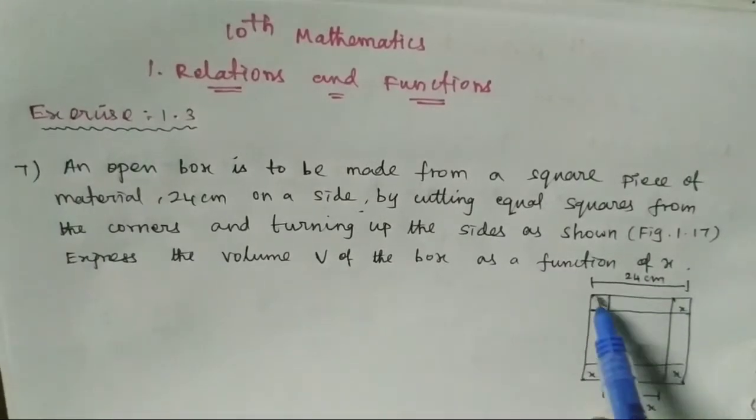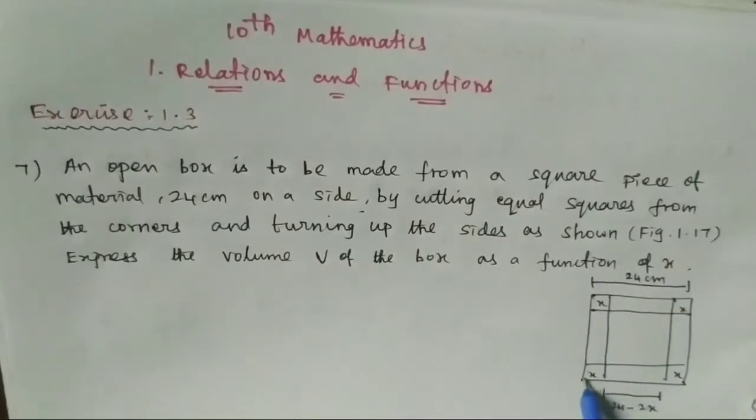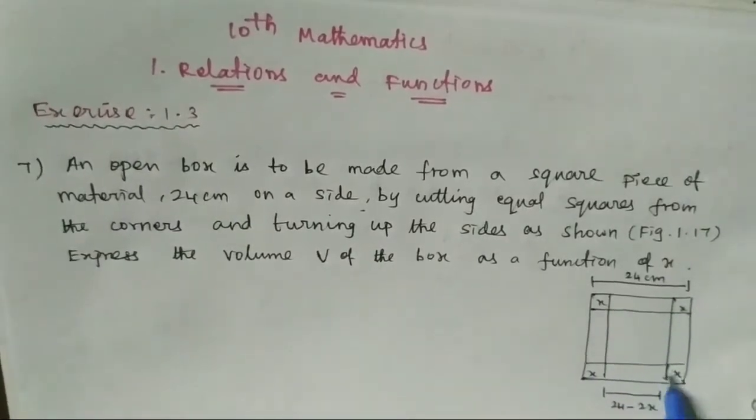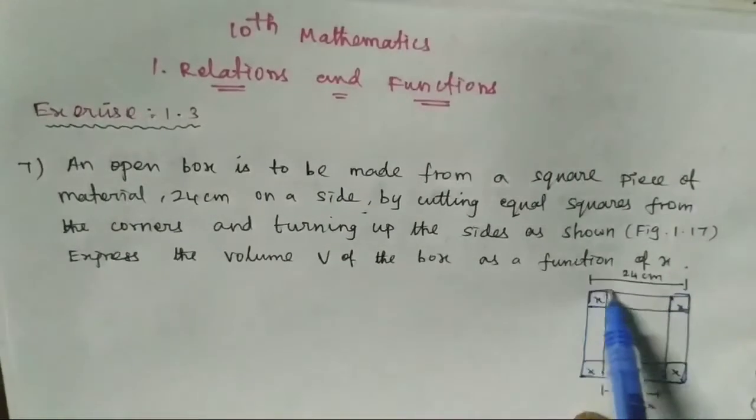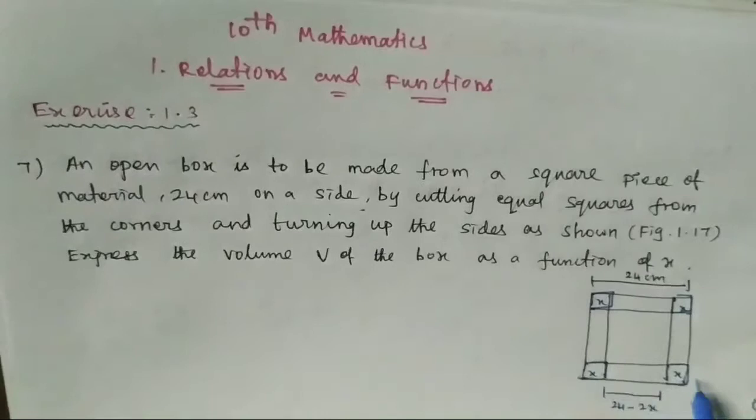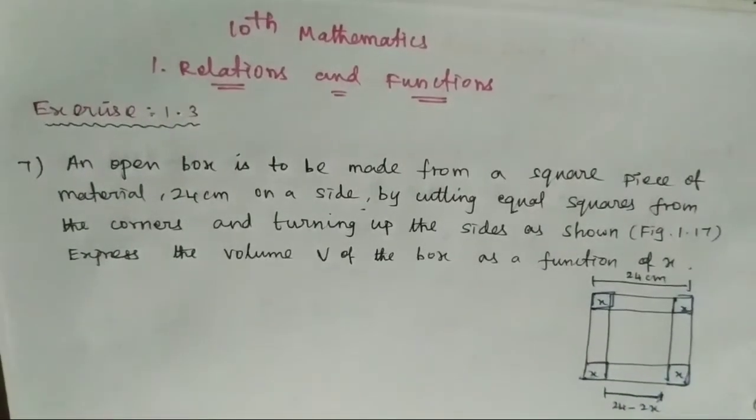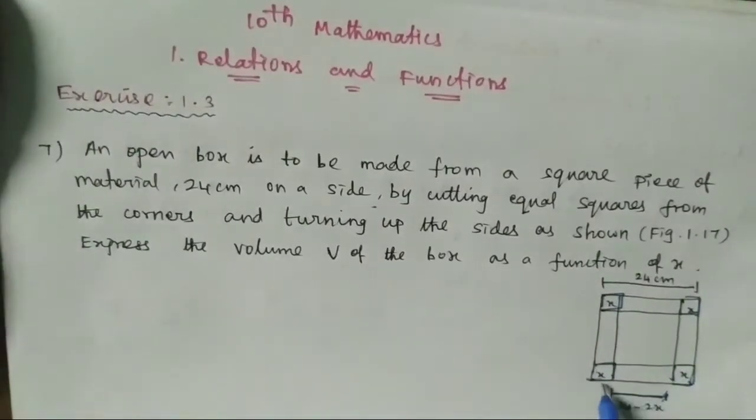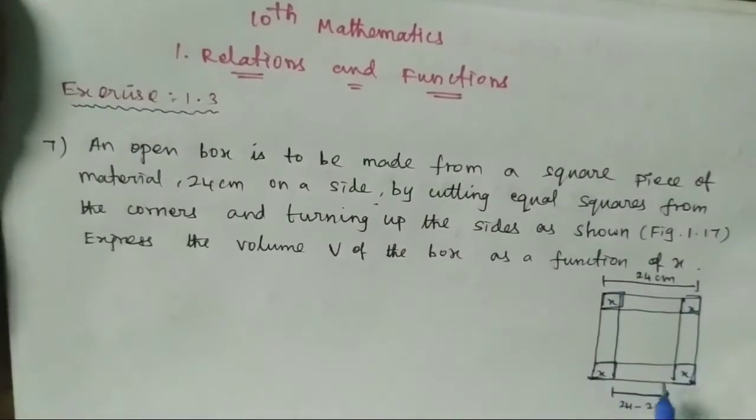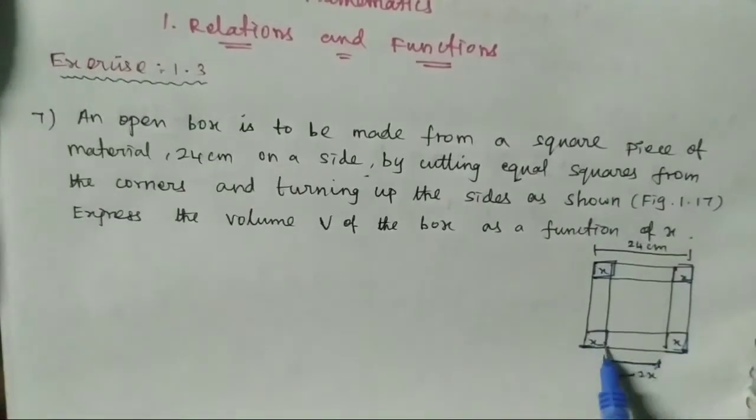That is a square sheet. The length is 24 cm and we cut x from each corner. After cutting and folding the sheet, we get a box. We need to express the volume in terms of x.